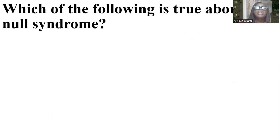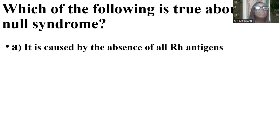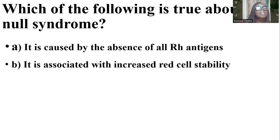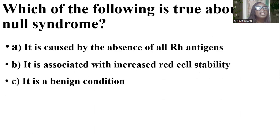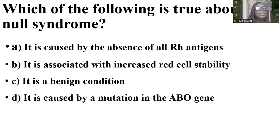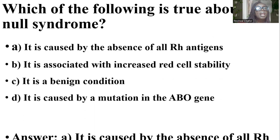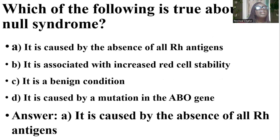Which of the following is true about RH-null syndrome? It is caused by absence of all RH antigens; it is associated with increased RH cell stability; it is a benign condition; it is caused by a mutation in the ABO gene. And the answer is A — it is caused by the absence of all RH antigens.